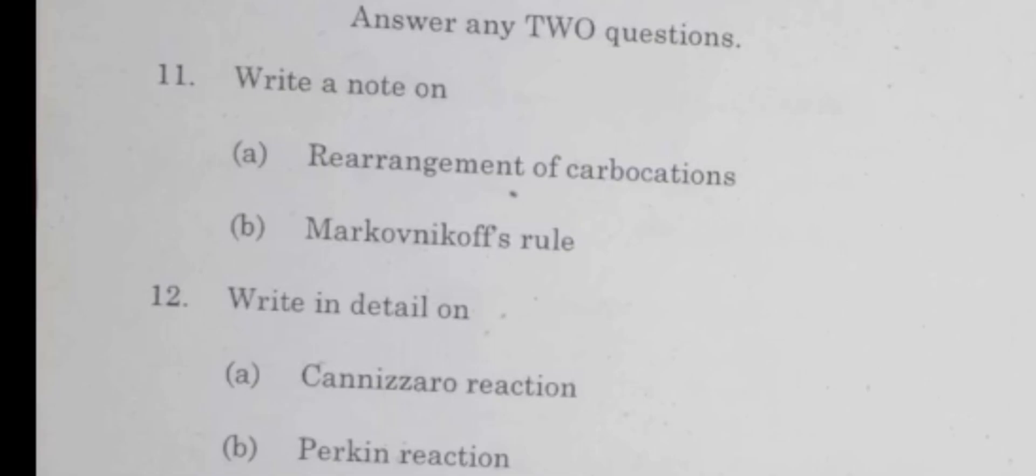Write a note on 10 marks: rearrangement of carbocation. Here the points end at unit 1 and 2. Mostly unit 2 and 3 are considered. If you have to add 10 marks, you have to add one to unit 2. Unit 2 and 3 are also one to unit 2, so 10 marks you have to add. You can choose rearrangement of carbocation and Markovnikov's rule, and add anti-Markovnikov's rule. Write in detail on Cannizzaro reaction and Perkin reaction. If you choose some other reactions, you have to add concentration to it.